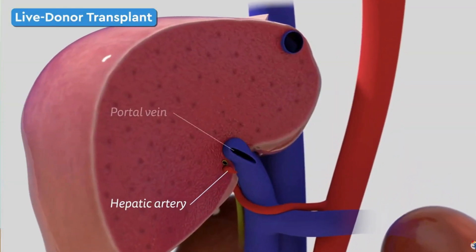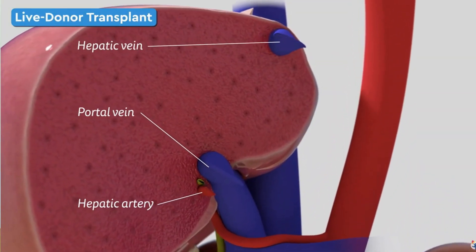Once the liver is made free, all the major connections of the liver to the body — like the blood vessels, which are the hepatic artery, portal vein, hepatic vein, and the bile ducts — are isolated and disconnected, and the liver is removed. Meanwhile, it's very important that the donor surgery is also progressing synchronously, and the part of the liver that is to be transplanted is already in the operation room and prepared accordingly.